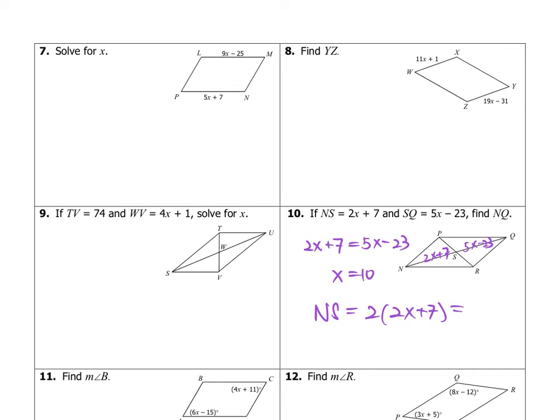To your equation. And so you should have 54. The setup here can also be 2x plus 7 plus 5x minus 23, and then you should arrive at the same answer. Because S is the midpoint of NQ because it's being bisected by the other diagonal, then I can just double this. That's the shortcut I took.